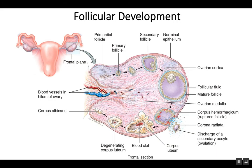Here is a frontal plane through an ovary. An ovary can be divided into the medulla — the inside of the ovary, which basically contains blood vessels and other tissue — and the cortex, where you find the ovarian follicles at different stages of follicular development. Follicular development is this slow maturation of the container that houses the developing oocyte.